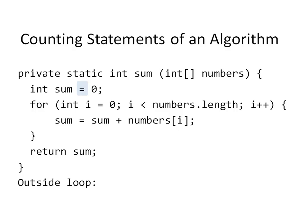We start by counting those steps that are executed only once, and that are outside of the for loop body. So here, we count the initialization of sum, initialization of the control variable, and returning sum. All together, those are 3 steps.